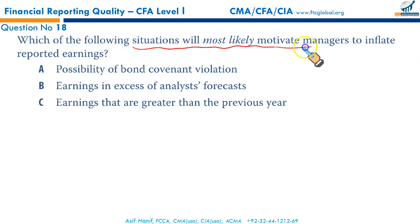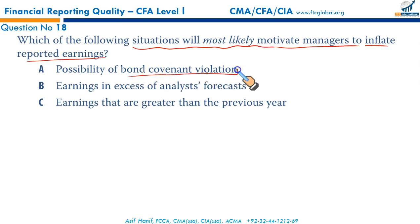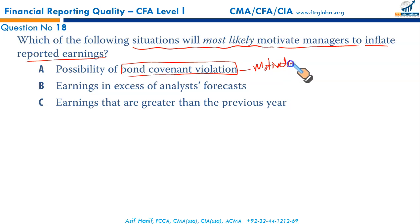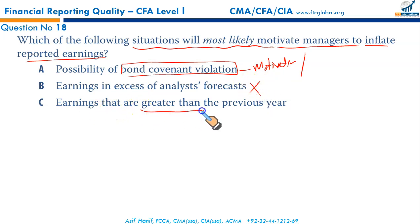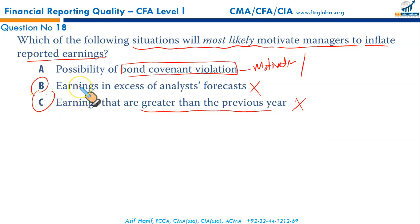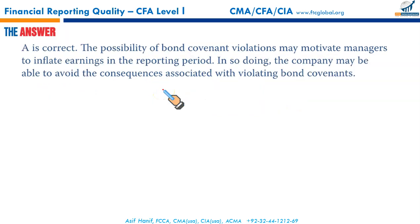Which situation would most likely motivate managers to inflate reported earnings? Possibility of bond covenant violation — if this is the threat, you might manipulate your numbers to show favorable results. This is the motivation or impetus to change. Earnings in excess of analyst forecast — if earnings are already good, no need to fudge the numbers. Earnings greater than the previous year — things are fine, no need to cook the books. A is the correct answer.